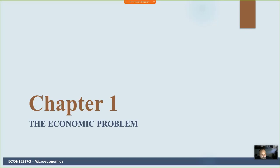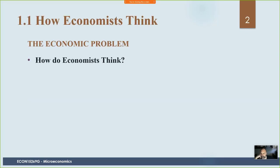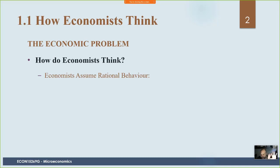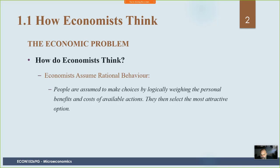Today we're going to talk about chapter one, which is the economic problem. This chapter begins by talking about how economists think. In economics we take reality and simplify it into models that show the key characteristics of an economic phenomenon. The real world is really messy, so we make models where we make certain assumptions to simplify things and get the underpinnings of what's going on. One of the things we do is we assume rational behavior — we assume people make logical choices. We know in reality that's not always true, but we make that assumption to simplify the model and keep things tractable.